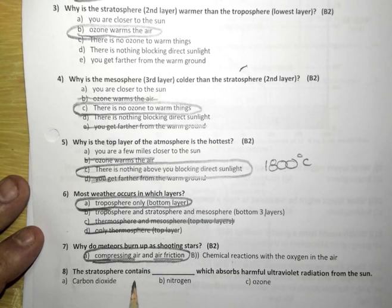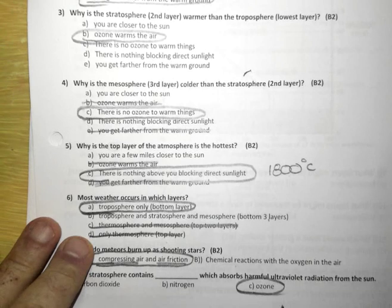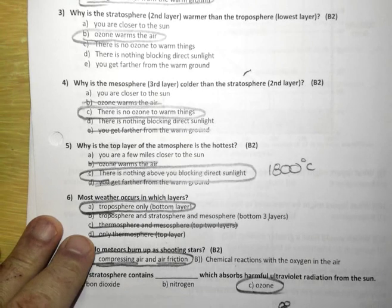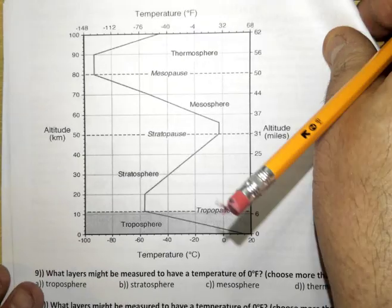The stratosphere contains what that absorbs harmful ultraviolet rays? Angie. B. B. The correct answer is C, ozone. Ozone is three molecules, three atoms of oxygen hooked together. Okay, here we have the exact same complicated graph that we had yesterday.